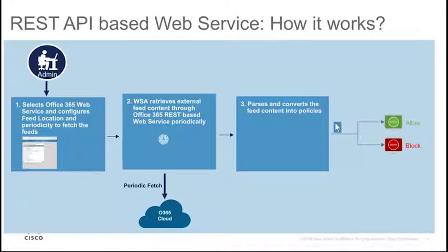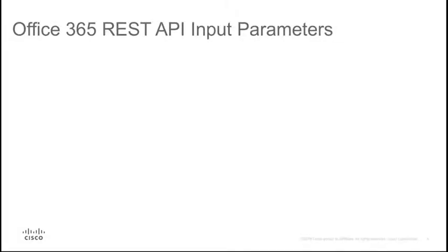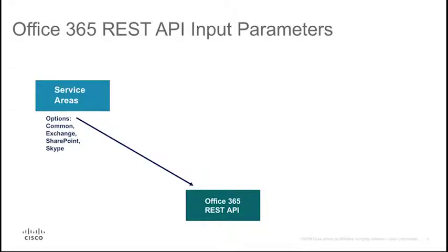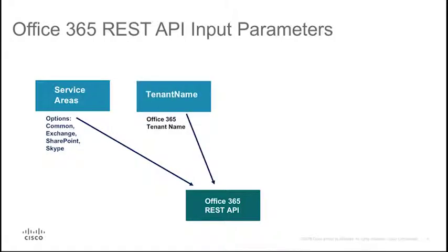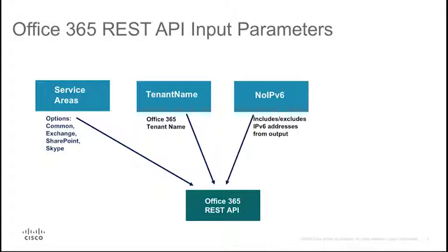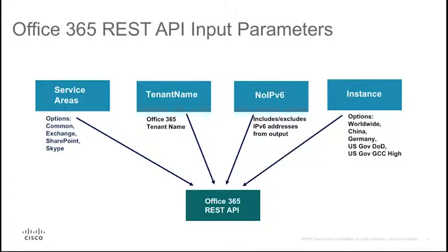WSA applies these policies to allow or block Office 365 traffic. The REST API used to fetch feeds from the Office 365 web service accepts various input parameters. Service Areas represents Office 365 service areas; valid options are Common, Exchange, SharePoint, and Skype. Tenant Name: the web service takes the provided tenant name and inserts it in parts of URLs that include the tenant name. No IPv6 includes or excludes IPv6 addresses from the output. Instance specifies the instance to return endpoints for; valid instances are Worldwide, China, Germany, US Government DOD, and US Government GCC High.